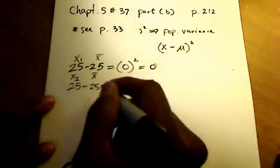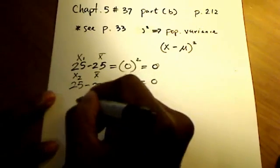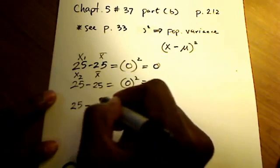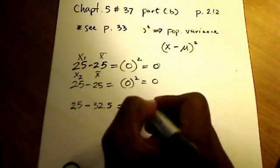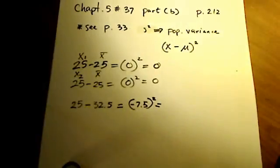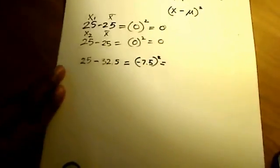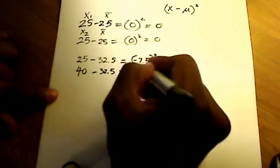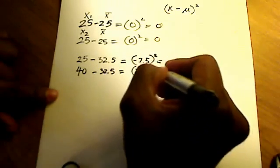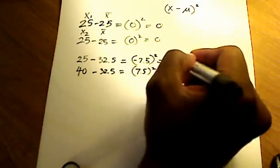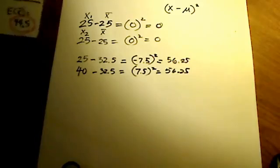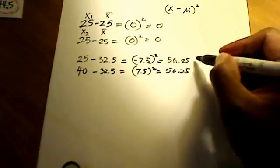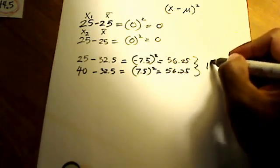I'm going to take 25 minus 32.5 squared, and I'm going to do 40 minus 32.5 quantity squared. The first one is 25 minus 32.5, which comes out to negative 7.5, but we're going to square that. I'm going to do the same thing for its buddy, 40 minus 32.5, which is positive 7.5. In each case when I square these, I get 56.25.